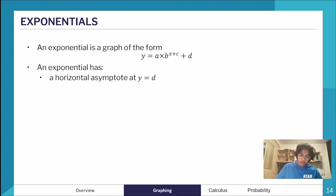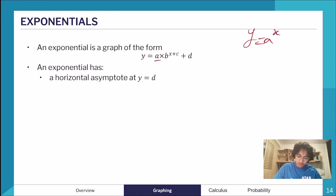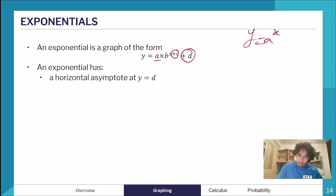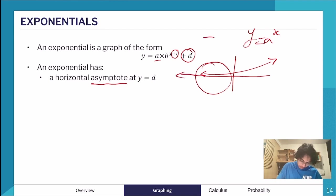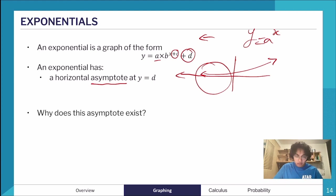An exponential is generally in the form y = a^x, but we can also apply transformations — dilation factors and translations. Our exponential has a horizontal asymptote at y = d. An asymptote is a value the graph can never equal. As x increases, the graph gets closer and closer to its asymptotic value but never reaches it.